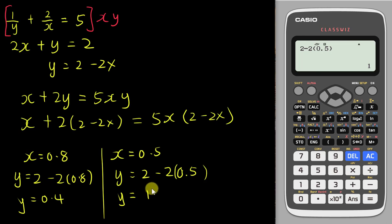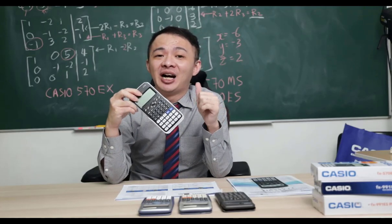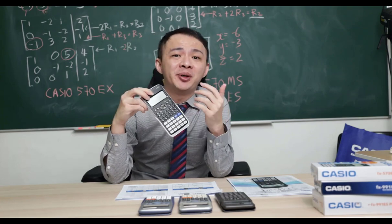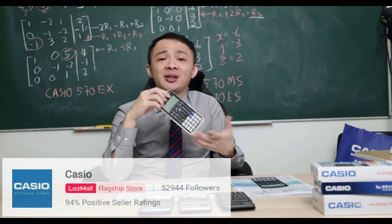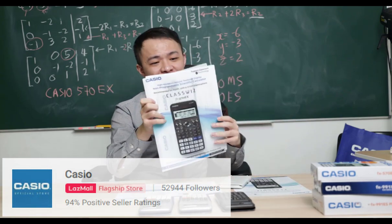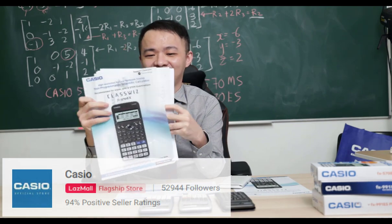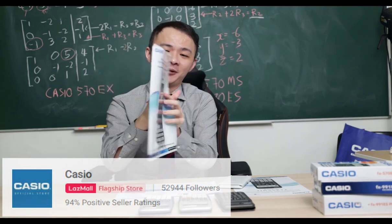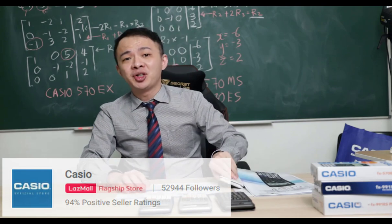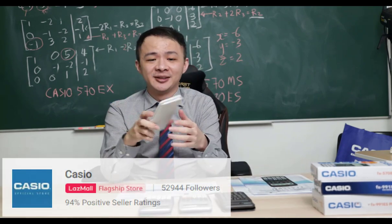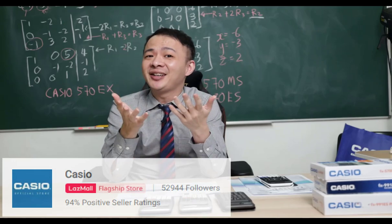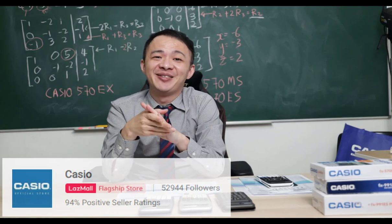This is how convenient a smart scientific calculator is for these kinds of questions. I hope you enjoyed this video. If you are interested in buying this calculator, I will share the Lazada link in the description below, which will bring you to the Casio flagship store. Casio Malaysia is currently running a promotion — whoever buys the calculator gets a free Casio L-file. Also, if you enter the promotion code — my name, shared in the description — you will get an additional 5 Ringgit discount. If you have any questions, please post in the comments below.